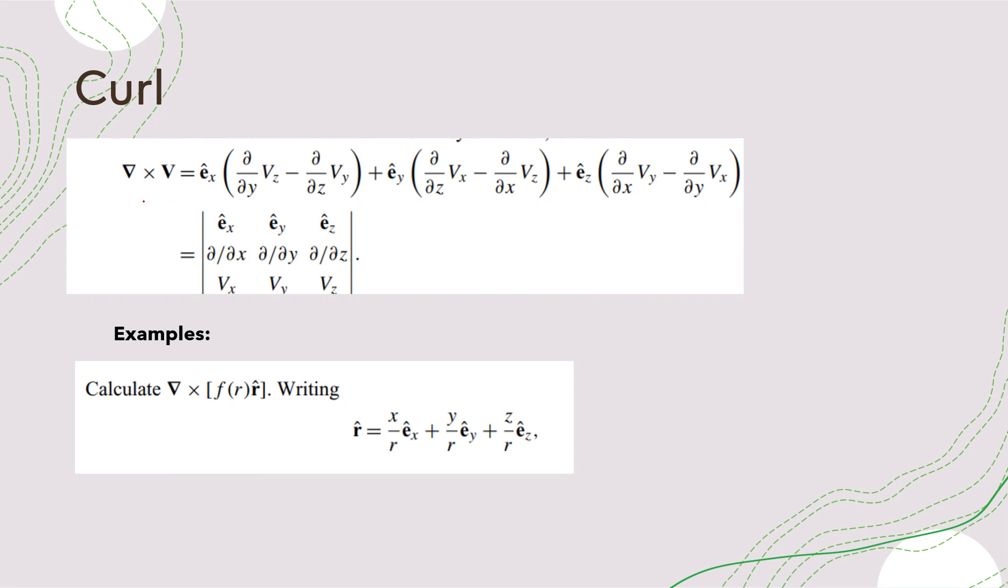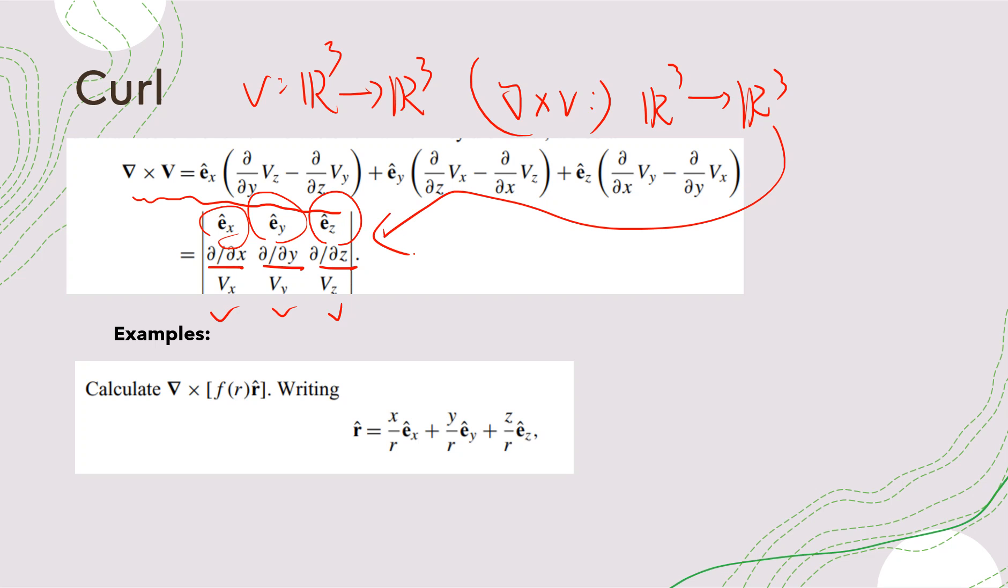Okay, so the next is curl, right? So curl is basically: you give a vector field from R3 to R3, and then you will get another R3 to R3. So divide into a list. You put partial x, partial y, partial z, and the Vx, Vy, Vz put in here. And then you put the vector field.